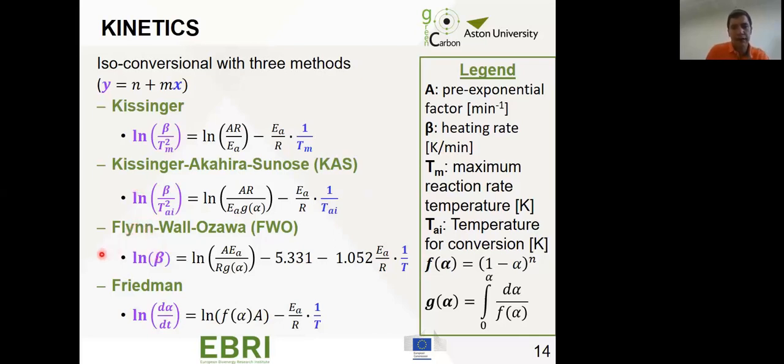The Flynn-Wall-Ozawa method is quite similar, but instead of dividing the heating rate by the temperature at which conversion is achieved, it's only the heating rate and the temperature is here. Finally, Friedman is different because it takes the inverse of temperature again, but instead of using heating rate, it's using the variation of conversion with time.